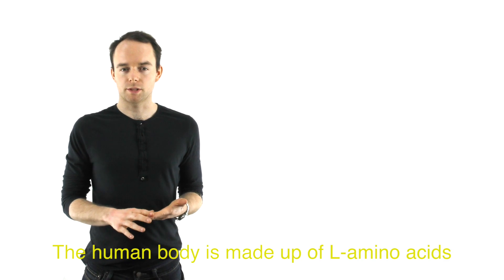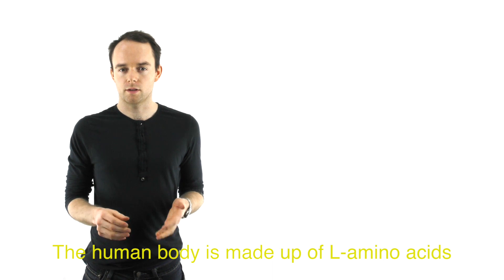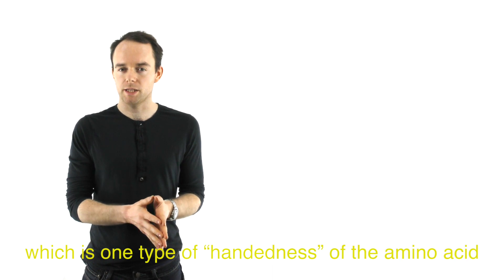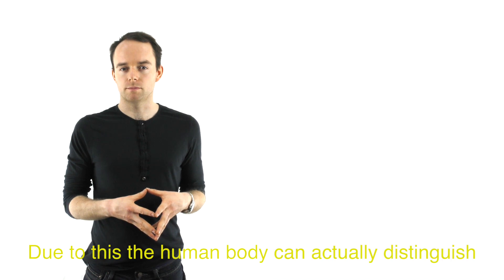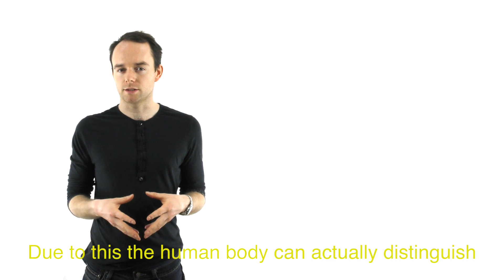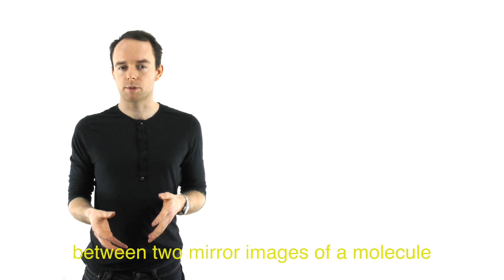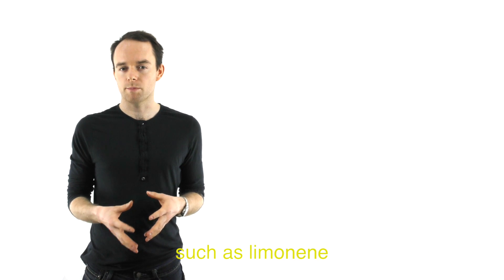The human body is made up of L-amino acids which is one type of handedness of the amino acid, and due to this the human body can actually distinguish between two mirror images of a molecule such as limonene.